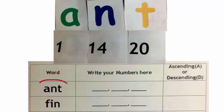The first word you have is AND. Right here we have made AND. Now, turn your alphabets and see what numbers are written behind. So we have 1, 14 and 20.